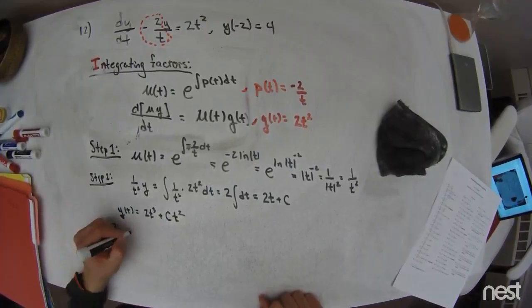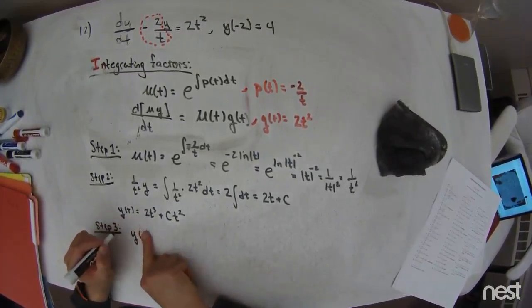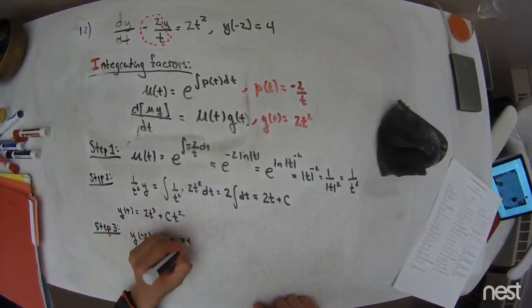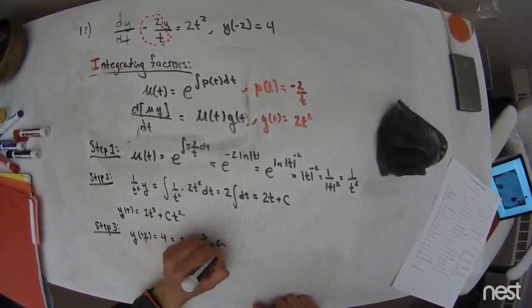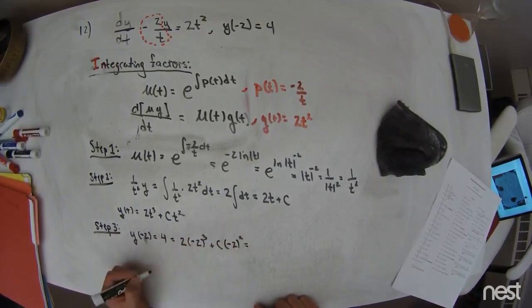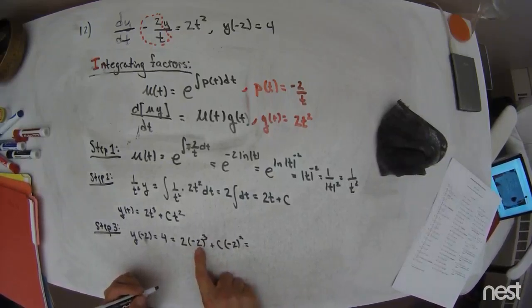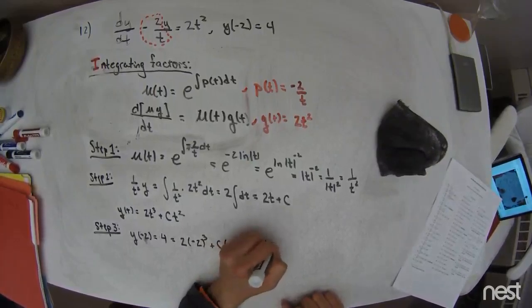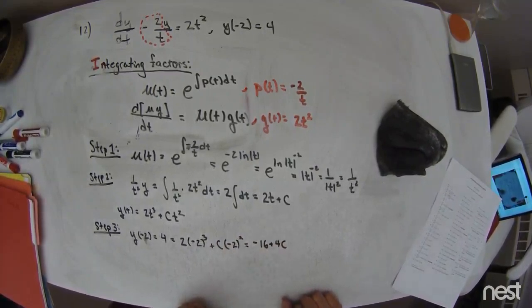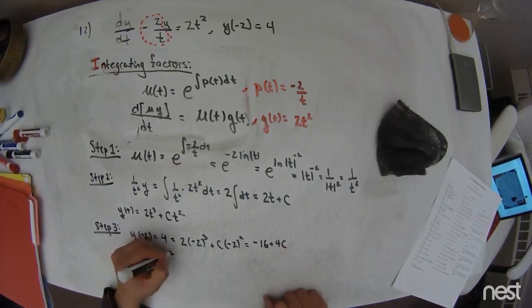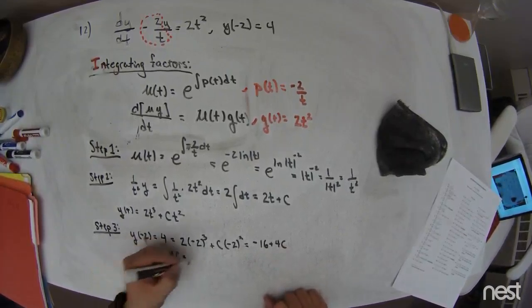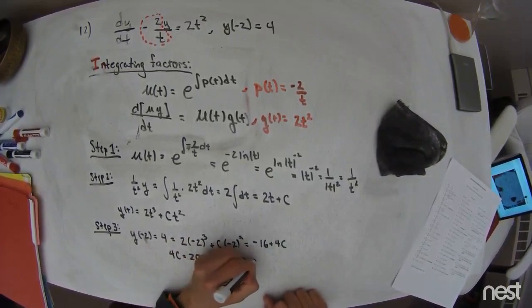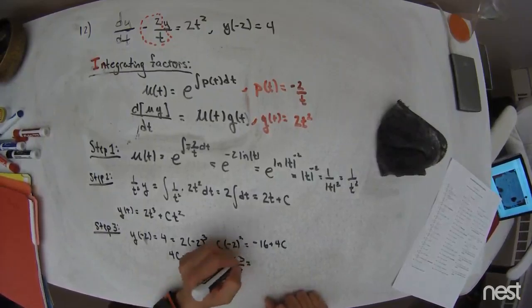Step 3 then is to apply the initial condition. I have that y of negative 2 is equal to 4, so this is 2 times negative 2 cubed plus c times negative 2 squared, which is equal to negative 8 times 2, which is negative 16 plus 4 times c, right? And so that's going to be 4 times c is equal to 20, so c is equal to 20 fourths, or let's see, 5.